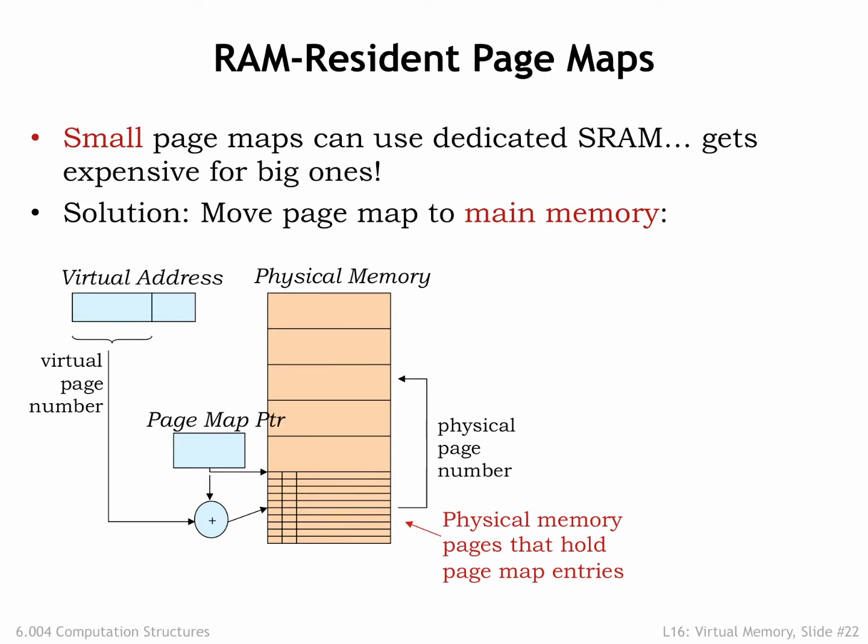But why use a special-purpose memory for the page map? Why not use a portion of main memory, which we have a lot of and have already bought and paid for? We could use a register, called the page map pointer, to hold the address of the page map array in main memory. In other words, the page map would occupy some number of dedicated physical pages. Using the desired virtual page number as an index, the hardware could perform the usual array access calculation to fetch the needed page map entry from main memory.